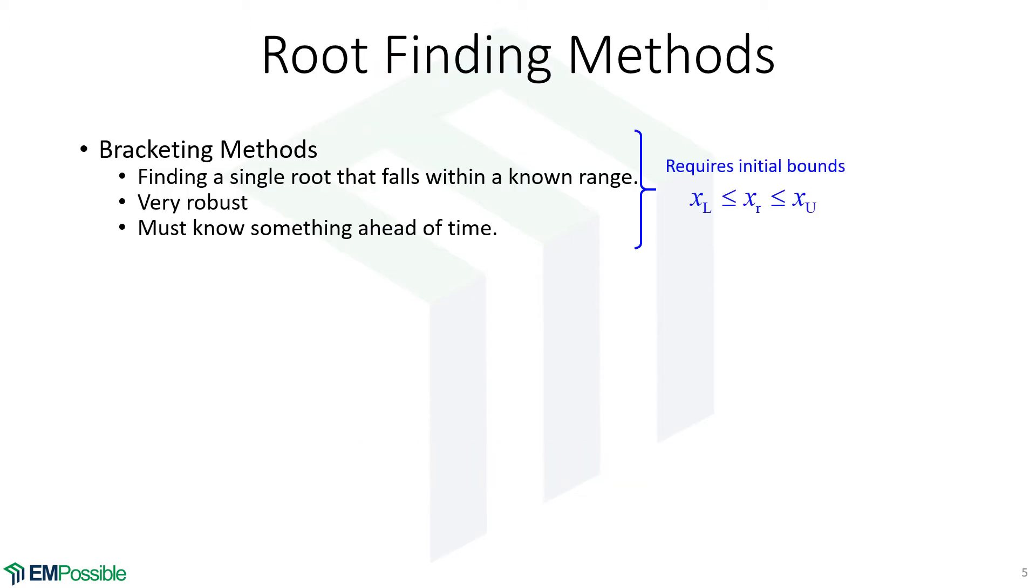Root-finding methods fall basically into two or three categories. In one category, we have the bracketing methods. We need an initial guess at the root, x sub r. And we have to initialize the algorithm with a lower and upper bound, some value of x low and x upper limit that bound this root. If we do, the bracketing methods are definitely the most robust. They may not be the fastest, but they're the most robust. We have to know something ahead of time and we need those bounds to only span one root. If it spans two roots, or more, or no roots, things can go crazy.